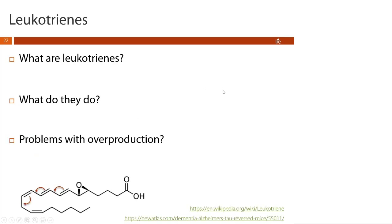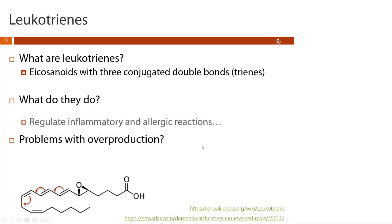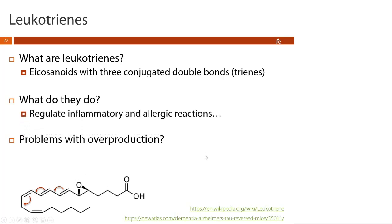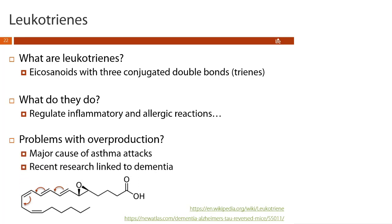Our last group of eicosanoids are leukotrienes. Leukotrienes are eicosanoids with three conjugated double bonds — hence the name 'triene.' They primarily function to regulate inflammatory and allergic responses. When overproduced, they can lead to asthma attacks, and recent research has even linked them to dementia.